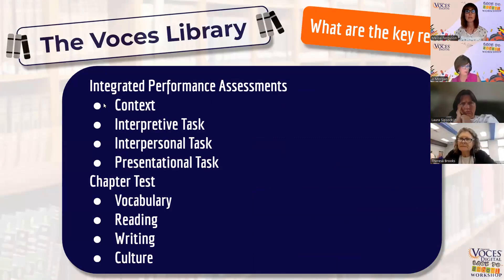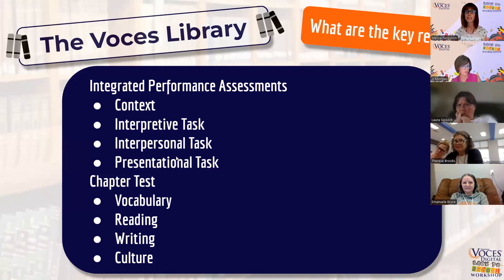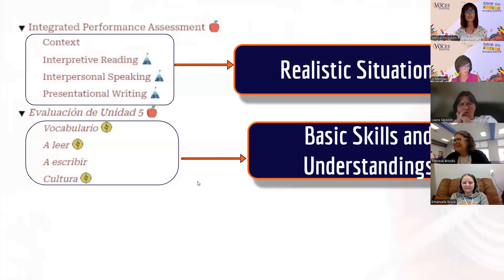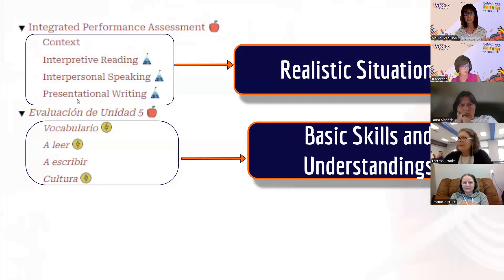You wrap things up with your assessment. You've got an integrated performance assessment that starts with a context, then moves into an interpretive task, an interpersonal task, and builds to a presentational task where students put everything together. If you want, you can also give a regular chapter test covering vocabulary, reading, writing, and culture. The IPA works through a realistic situation through interpretive, interpersonal, and presentational activities, while the traditional test covers students' basic skills and understandings from throughout the unit.